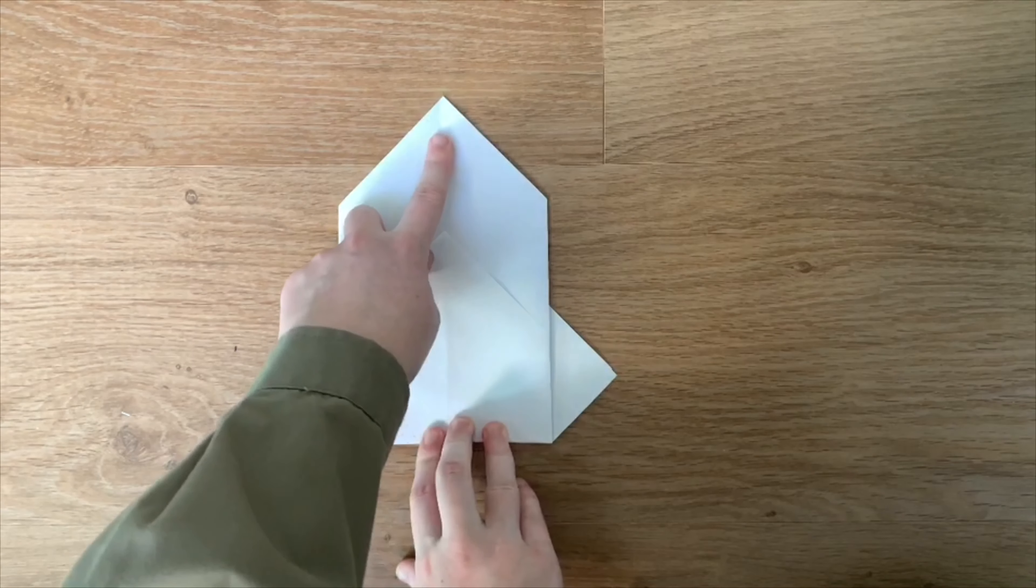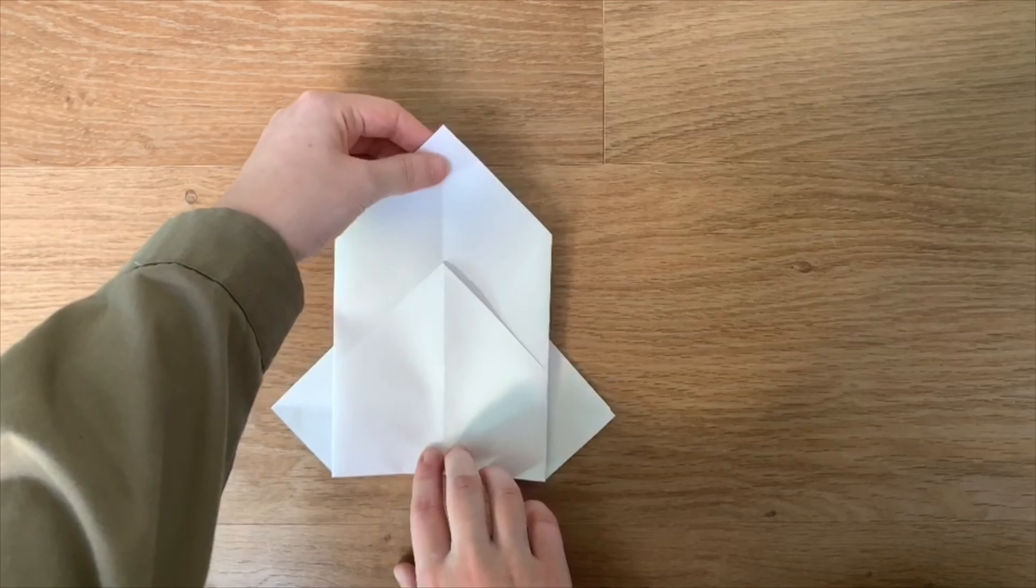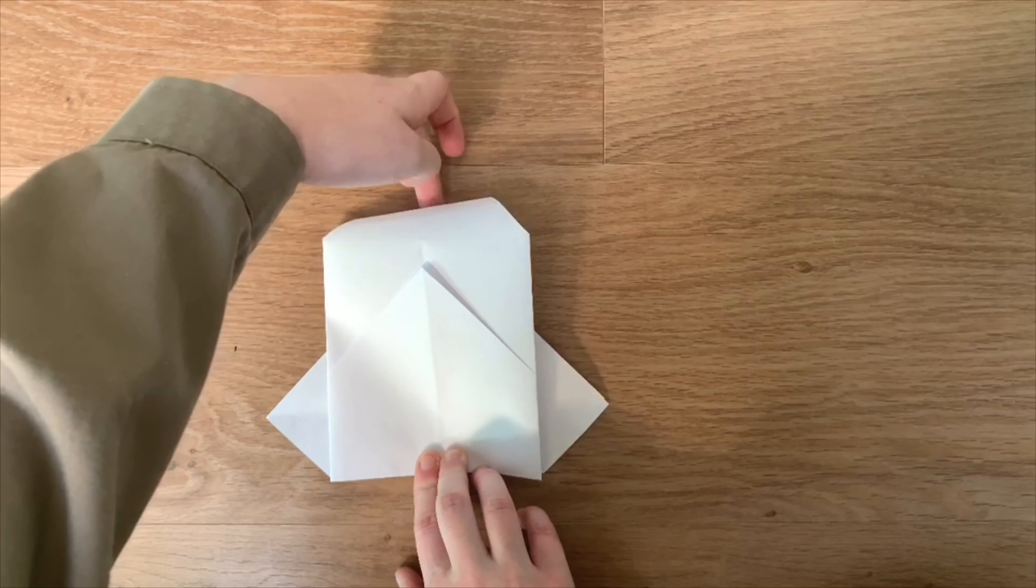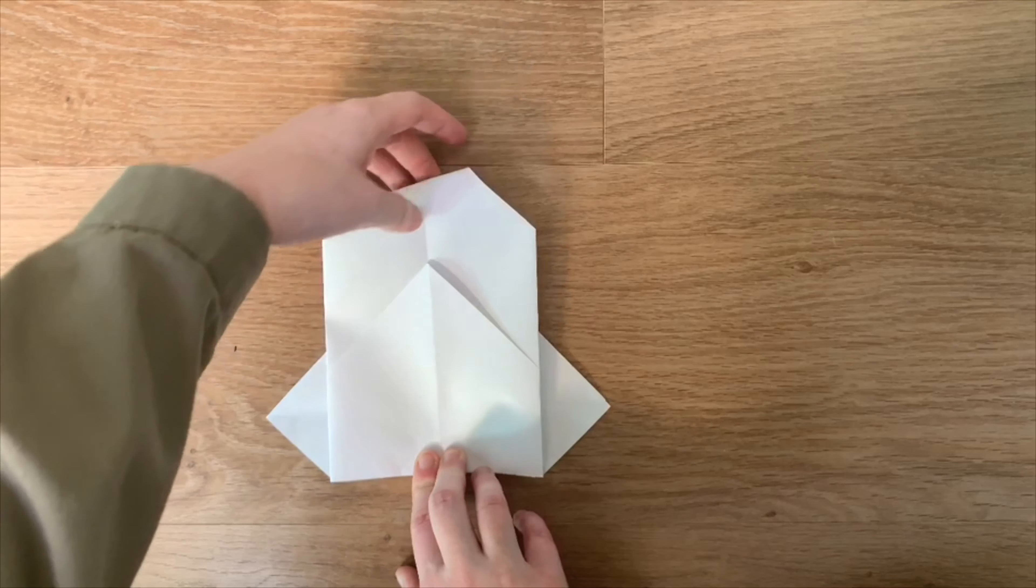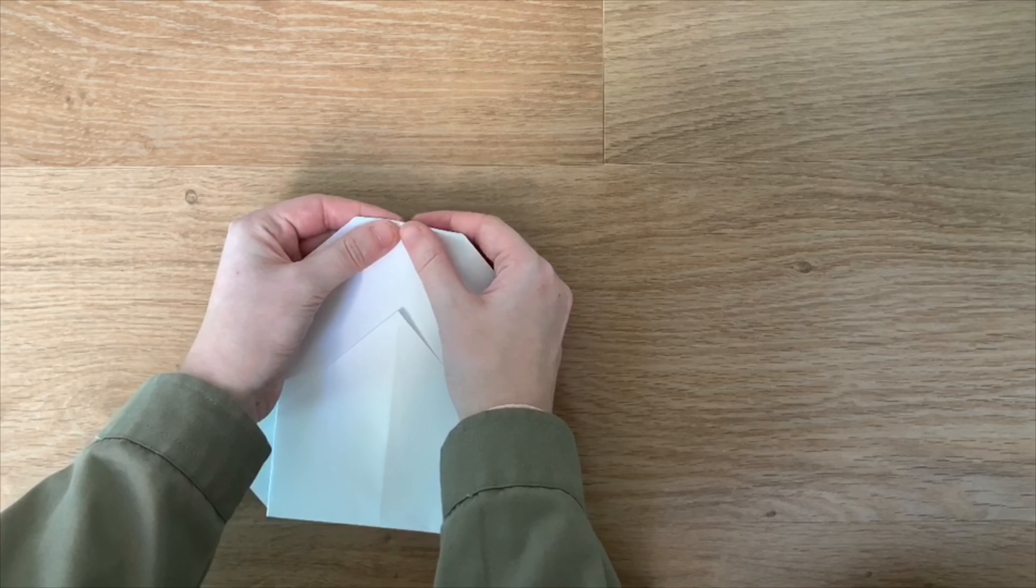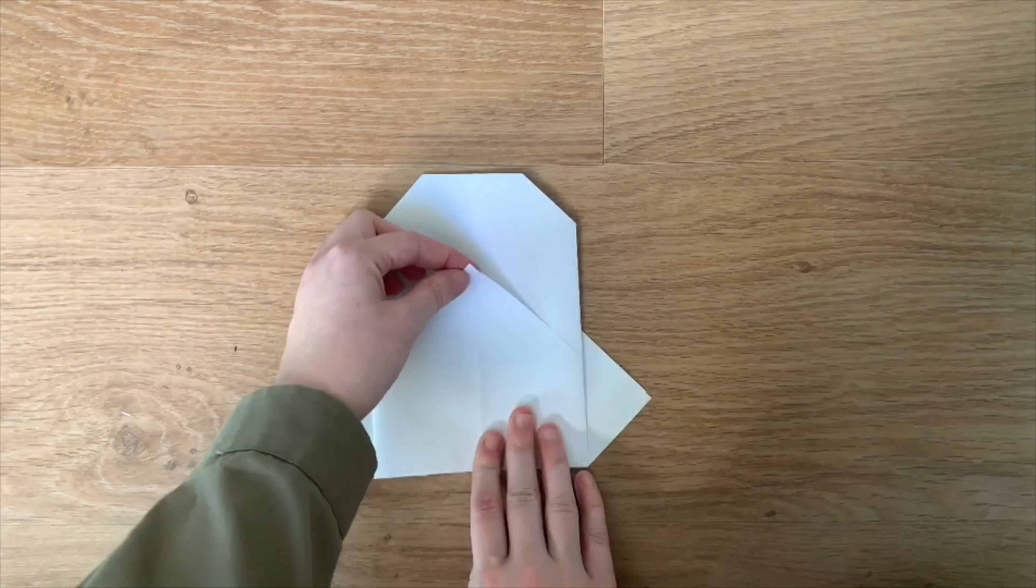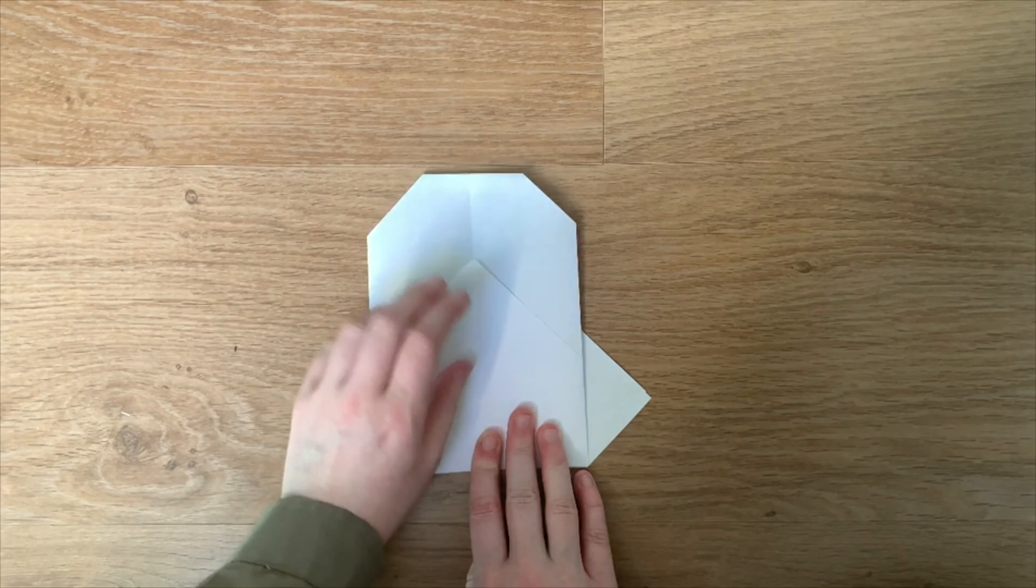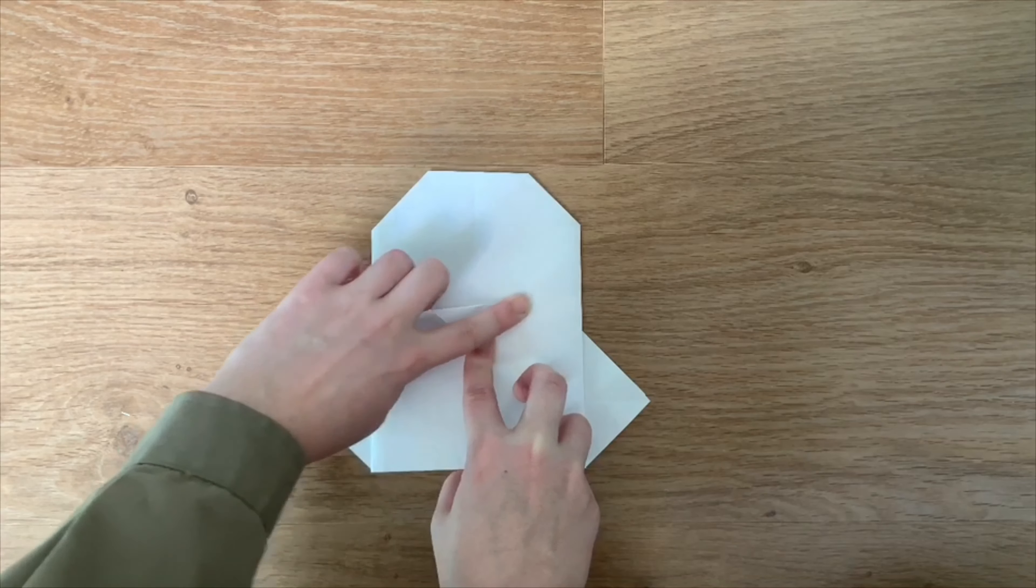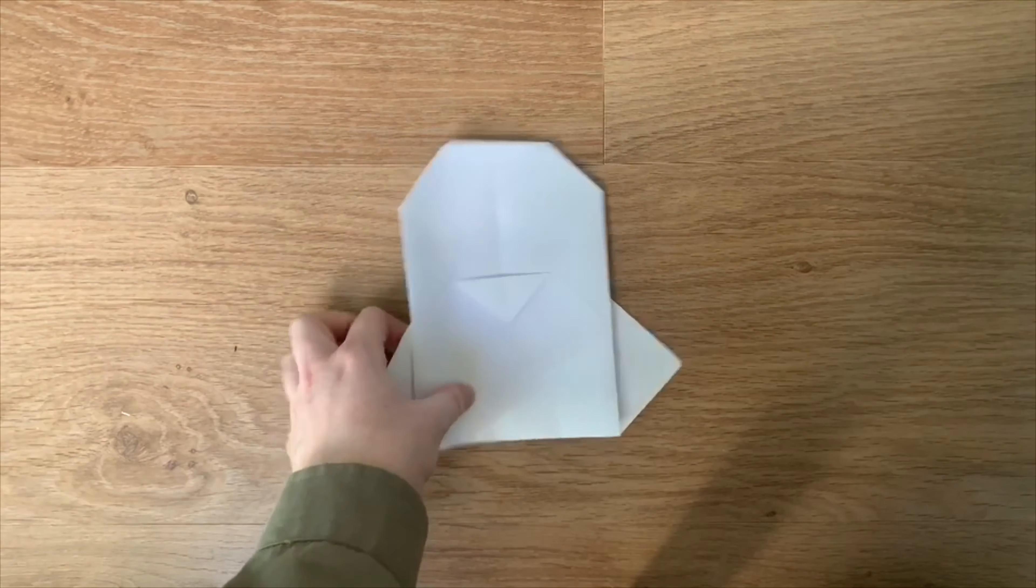Because we don't want the penguin to have a pointy forehead and we need it to have a beak, take this top corner and fold it underneath as much as you want, depending on how big or small you want the penguin's forehead to be. I just take it under about an inch. Just like that. Now take this and fold it down as big as you want the beak to be. I do that about an inch too.